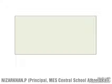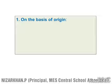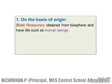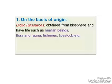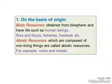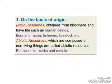The first classification of resources is on the basis of origin. It is divided into two: first, biotic resources — obtained from the biosphere and have life, for example human beings, flora and fauna, fisheries, and livestock. Second, abiotic resources — which are composed of non-living things, for example rocks and metals.